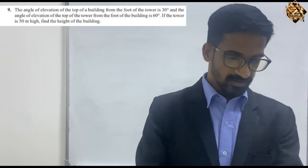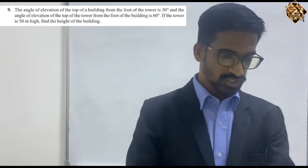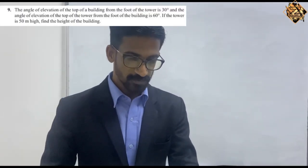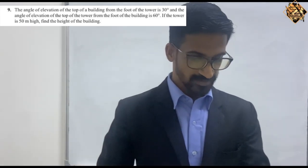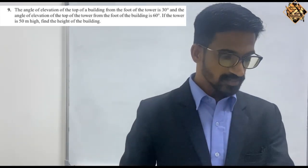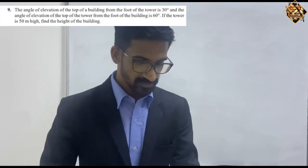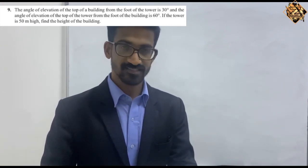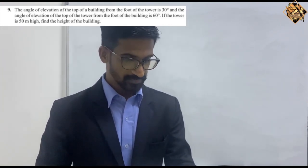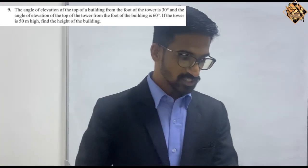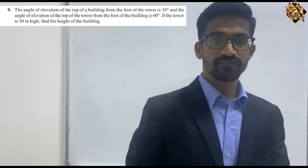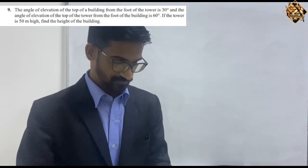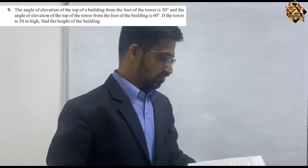Hi students, now let's look at question number 9 of page number 204. The angle of elevation of the top of a building from the foot of a tower is 30 degrees, and the angle of elevation of the top of the tower from the foot of the building is 60 degrees. If the tower is 50 meters high, find the height of the building.